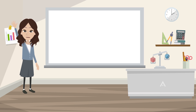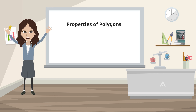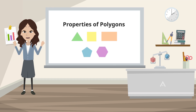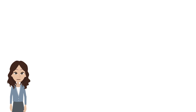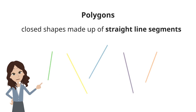Hello learners, it's great to see you again. Today we will learn about the properties of polygons. Polygons are closed shapes made up of straight line segments.